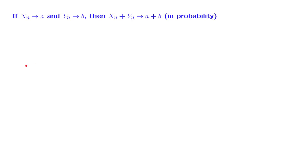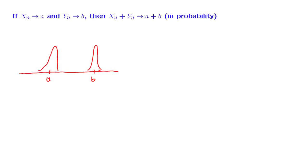What is the statement saying? It says that if we have a sequence of random variables that converges to a certain number a — which basically means that when n is large, the distribution is highly concentrated around a — and if we have another sequence of random variables that converges to a certain number b, which means that the probability distribution of Yn is heavily concentrated around b, then the probability distribution of the sum of the two random variables is heavily concentrated in the vicinity of a plus b.